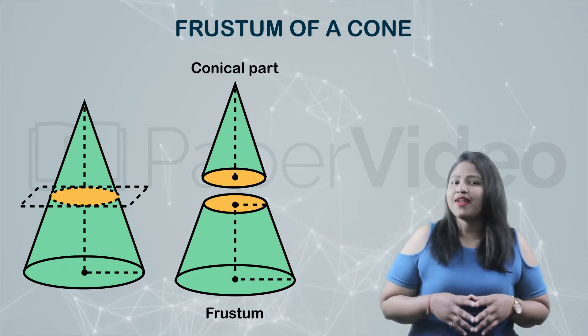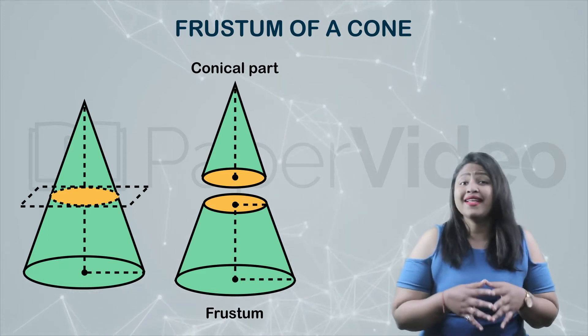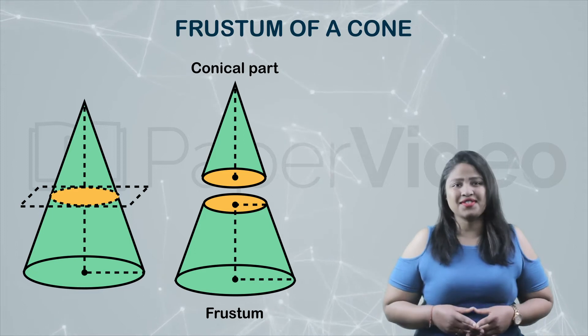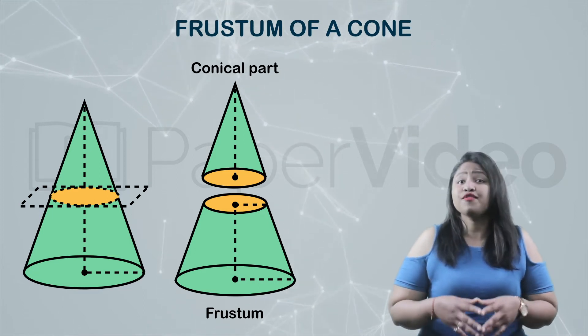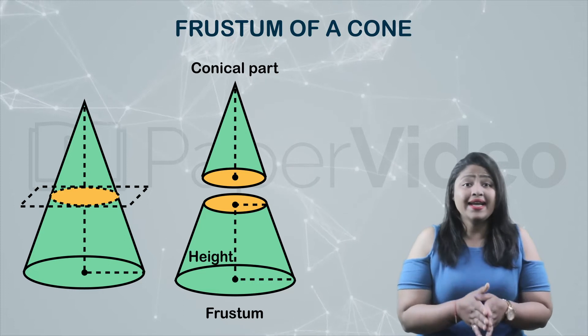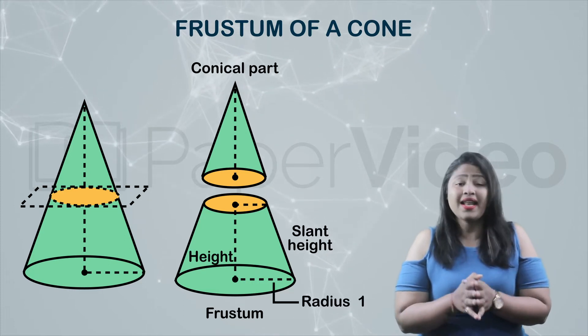A frustum of a cone has two flat surfaces, one bigger than the other and a curved surface. We can define a frustum of a cone using four dimensions: height, slant height, radius 1 and radius 2.